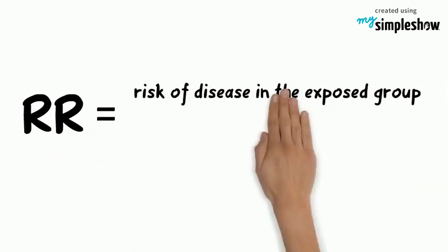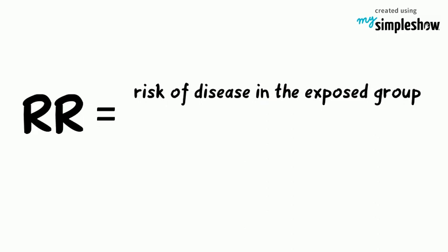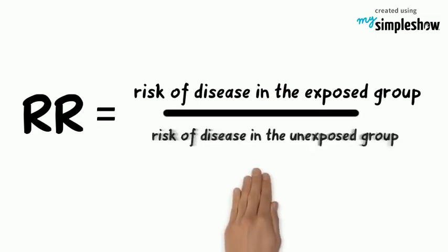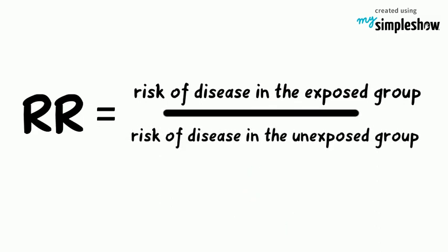The main measurement used in cohort studies is called the relative risk, also known as risk ratio. A relative risk is the ratio between the risk of disease in the exposed group compared to the risk of disease in the unexposed group.